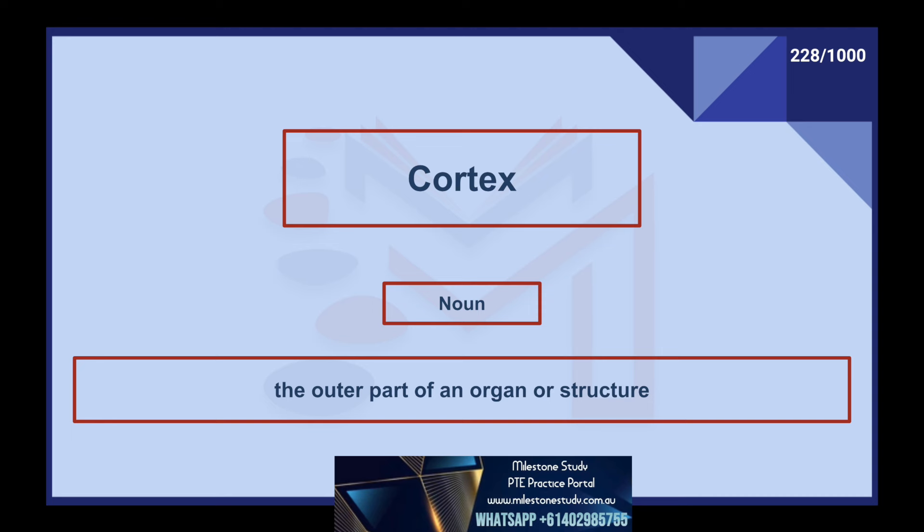Cortex, noun: the outer part of an organ or structure. Credibility, noun: quality of being believable or deserving of trust. Criteria, noun: standard used to make judgments or decisions. Critically, adverb: in a way that is serious or dangerous, vitally. Critique, noun: a review of quality of a work. Crude, adjective: basic or made without skill, such as a crude drawing.